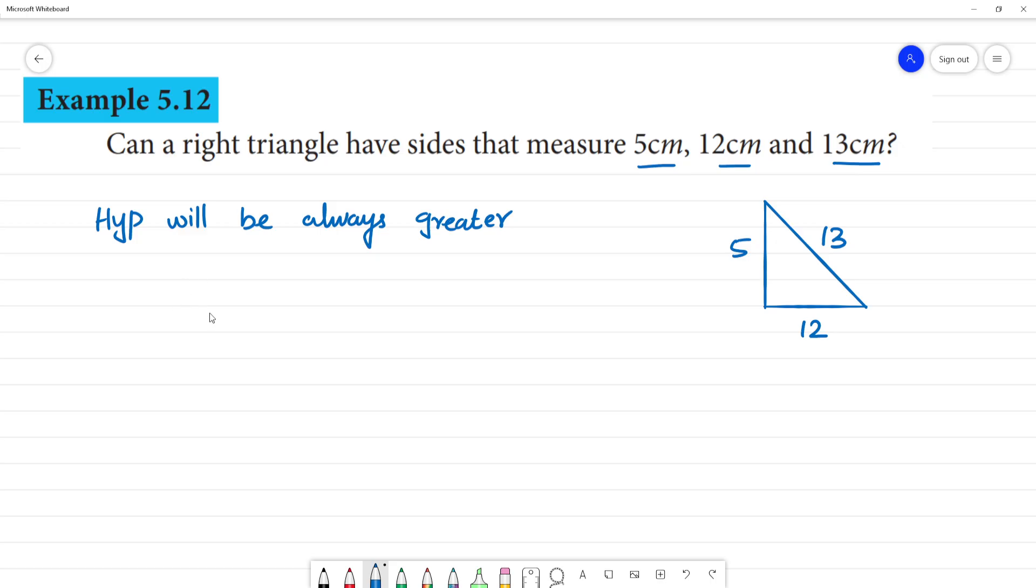So now we add. That is, sum of the squares: 5 square plus 12 square, that will be equal to 13 square. Now we check.